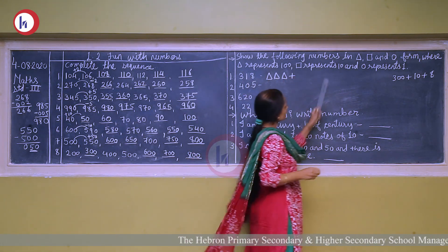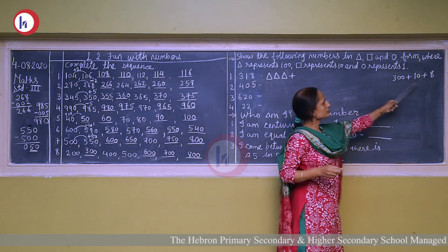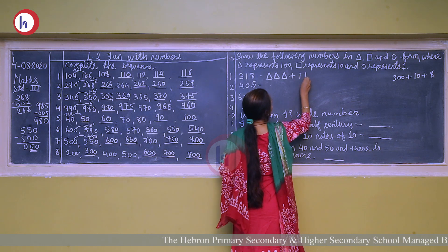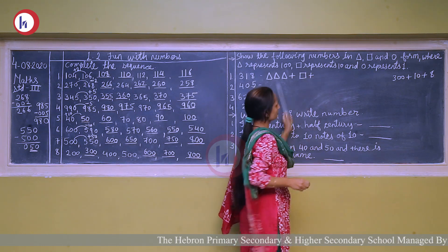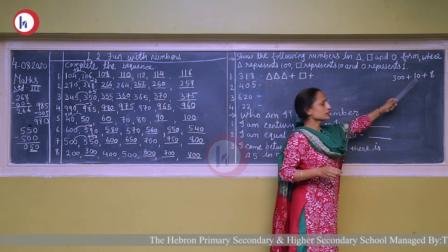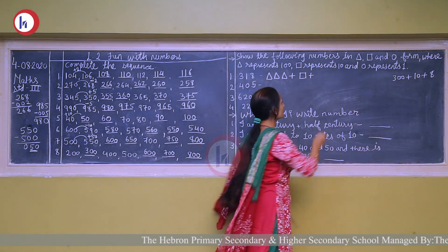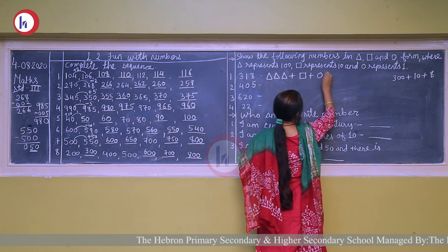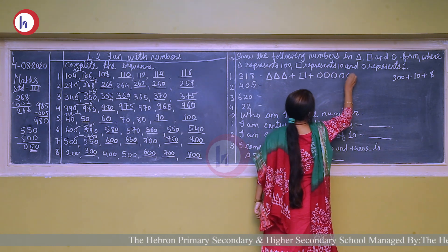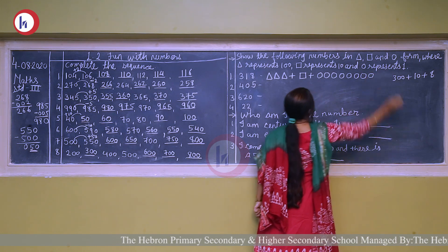Plus: square represents ten, and here only one ten is there, so we will draw only one square. Plus: circle represents one. Which number is in the ones place? Eight. So we will draw eight circles: one, two, three, four, five, six, seven, eight.